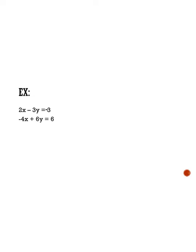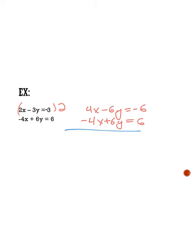For our last example, we're going to solve using elimination and get the y's to cancel this time. Since I have a negative 3 and a positive 6 for my y coefficients, if I multiply the first equation by positive 2, it will turn into a negative 6, making them opposites. When I multiply, I get 4x minus 6y is equal to negative 6. The second equation stays as negative 4x plus 6y is equal to 6. Adding everything together, the x's cancel, the y's cancel, and the constants cancel, giving us 0 equals 0. Since 0 equals 0, these lines are in fact the same line, and the answer is infinitely many solutions.